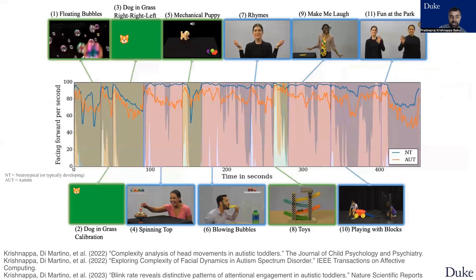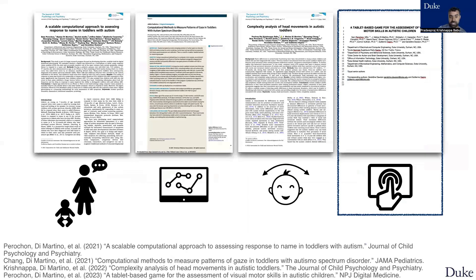Here in this figure, you can see the number of participants attending or facing forward towards the stimuli were higher for the neurotypical kids compared to the autistic kids.